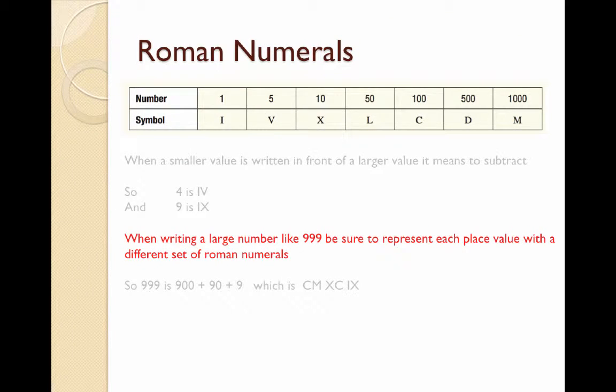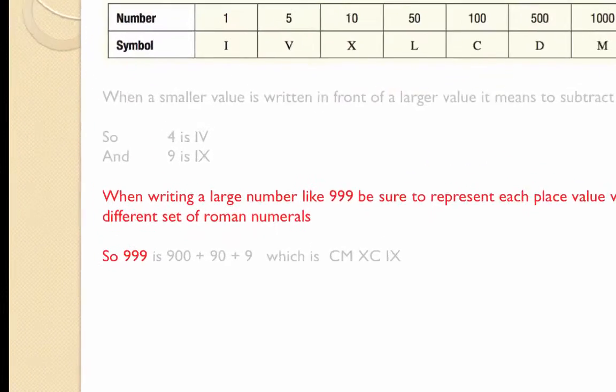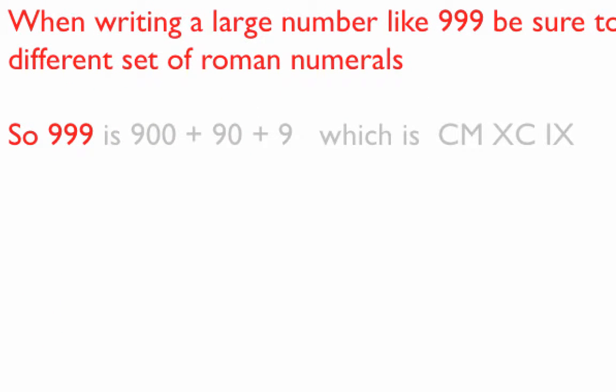When writing large numbers like 999, be sure to represent each place value with a different set of Roman numerals. For example, 999 is 900 plus 90 plus 9. This in Roman numerals is CM for the 900 which is 100 before 1000, XC for 90 which is 10 before 100, and IX which is 1 before 10.